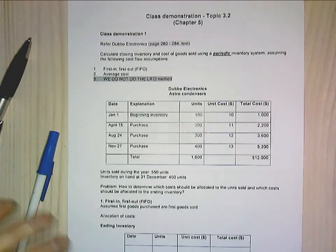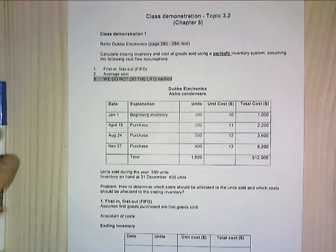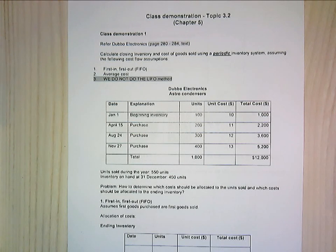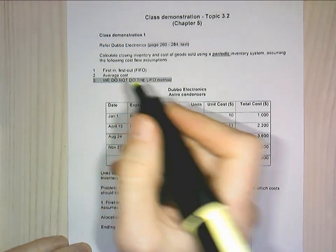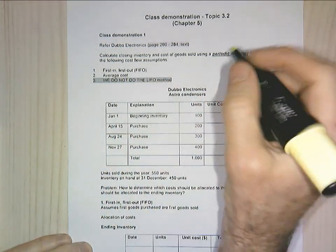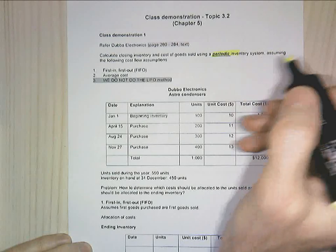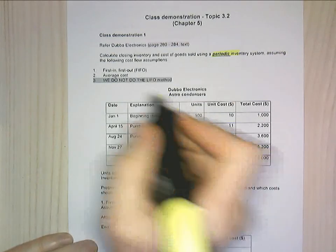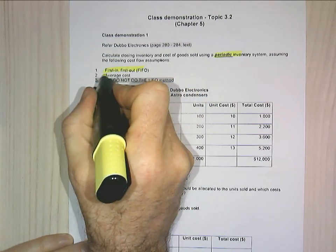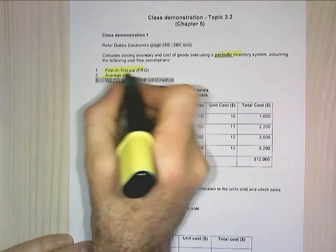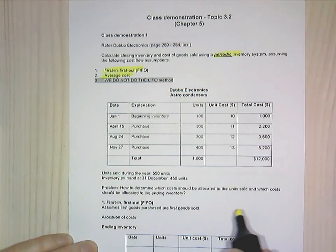We're looking at some inventory valuations. The two inventory valuations we're going to look at are through the periodic system. Firstly, we're going to do first in, first out, and then we're going to do average cost.